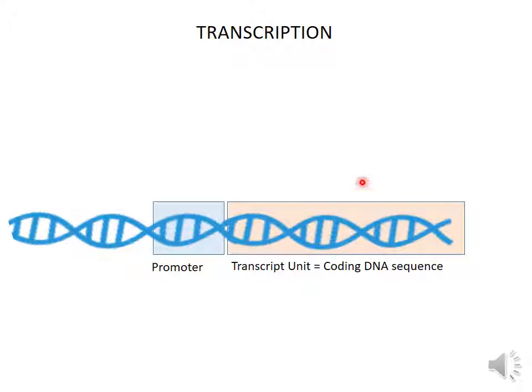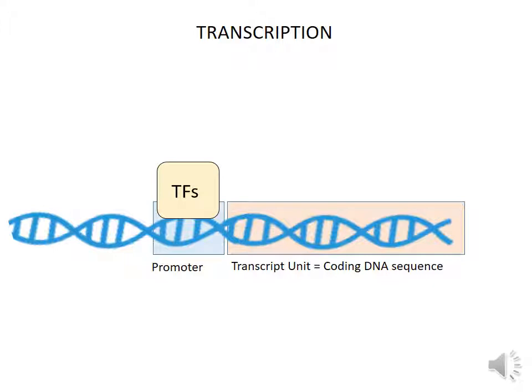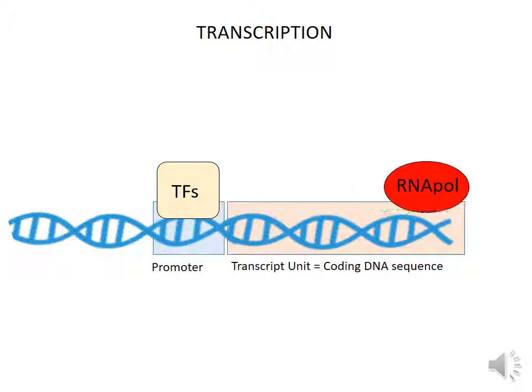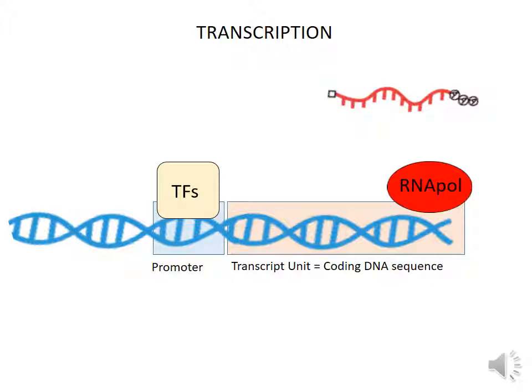To carry out transcription, there are different elements that are necessary. We first need a transcript unit or coding DNA sequence that is presented by a promoter region. We also need transcription factors that will bind to the promoter region to initiate the transcription complex. Before transcription starts, ATP will be hydrolyzed, providing energy to the system. Then the RNA polymerase starts copying the transcript unit, generating the messenger RNA molecule. When the RNA polymerase reaches the end of the transcript unit, the messenger RNA is released and transcription is finished.